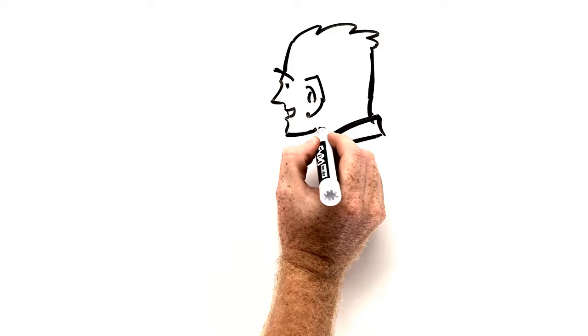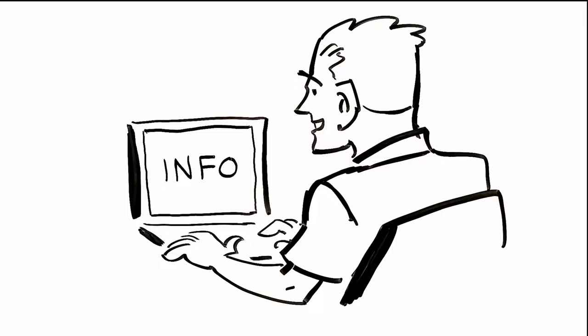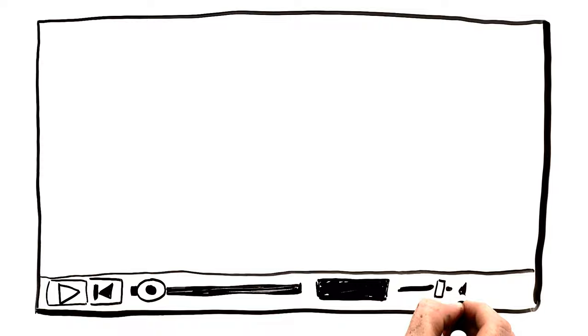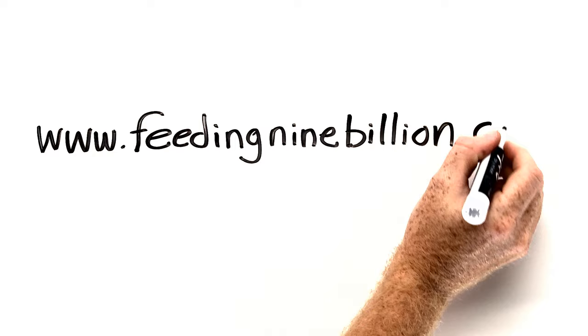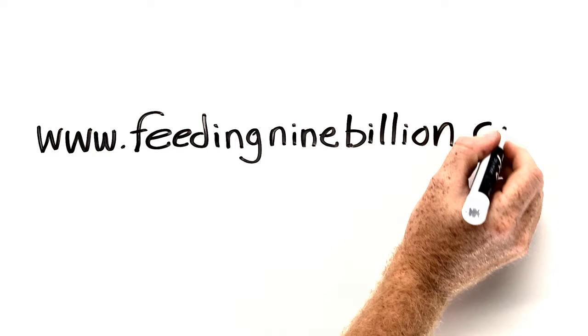What can you do to help? First, go to our website. There's more information about each of the four strategies and things you can do to make a difference locally and internationally. We'll release an in-depth video and associated campaign for each of the four strategies over the next year, but we need to know which you're most interested in. So go to www.feeding9billion.com and vote on your favorite topic.